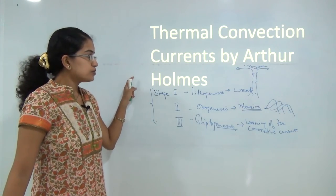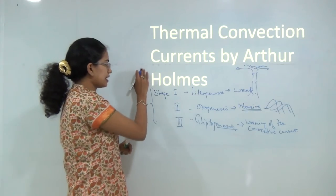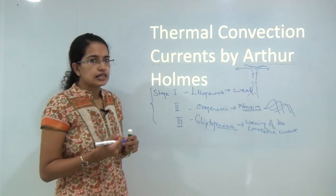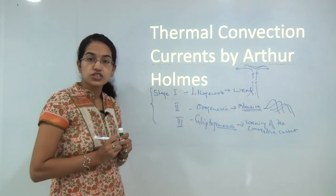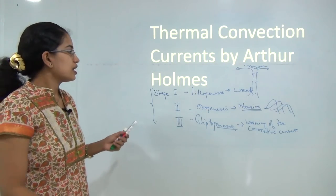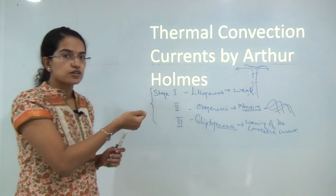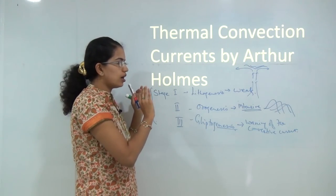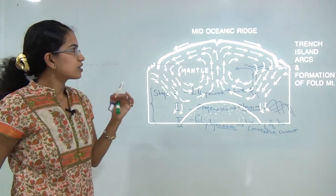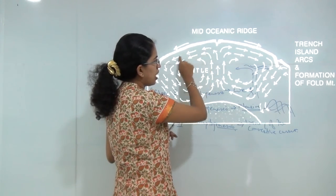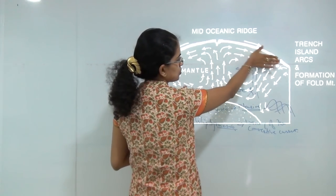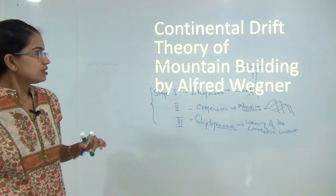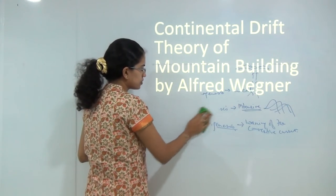Holmes' theory became one of the most popular theories, but the major criticism was that convective currents and the interior heat of the earth alone are not sufficient to explain the process of mountain building. This argument led to many elements being incorporated into the concept of explaining mountain origin through continental drift. A diagram here shows how convective currents move towards the island arc and the mid-oceanic ridge being formed.